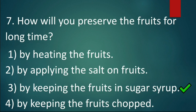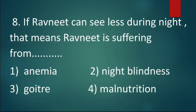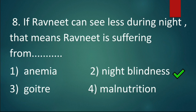Question number eight: If Ravneet can see less during the night, that means Ravneet is suffering from dash. Options: option one — anemia, option two — night blindness, option three — goiter, option four — malnutrition. Out of all these options the right answer is option two: night blindness, as a person suffering from night blindness can see less at night time.